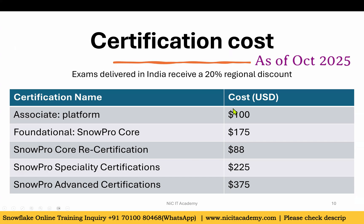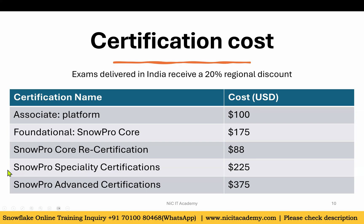Regarding certification costs: SnowPro Core is approximately $175 USD plus tax. If you are taking the certification from India, you can expect a 20% regional discount. The SnowPro Core certification is valid for two years. If you want to recertify after two years, you can pay $88 USD. Specialty certifications cost $225 USD. Advanced certifications cost $375 USD, and with tax of around $40-$50, the total comes to approximately $440-$450.